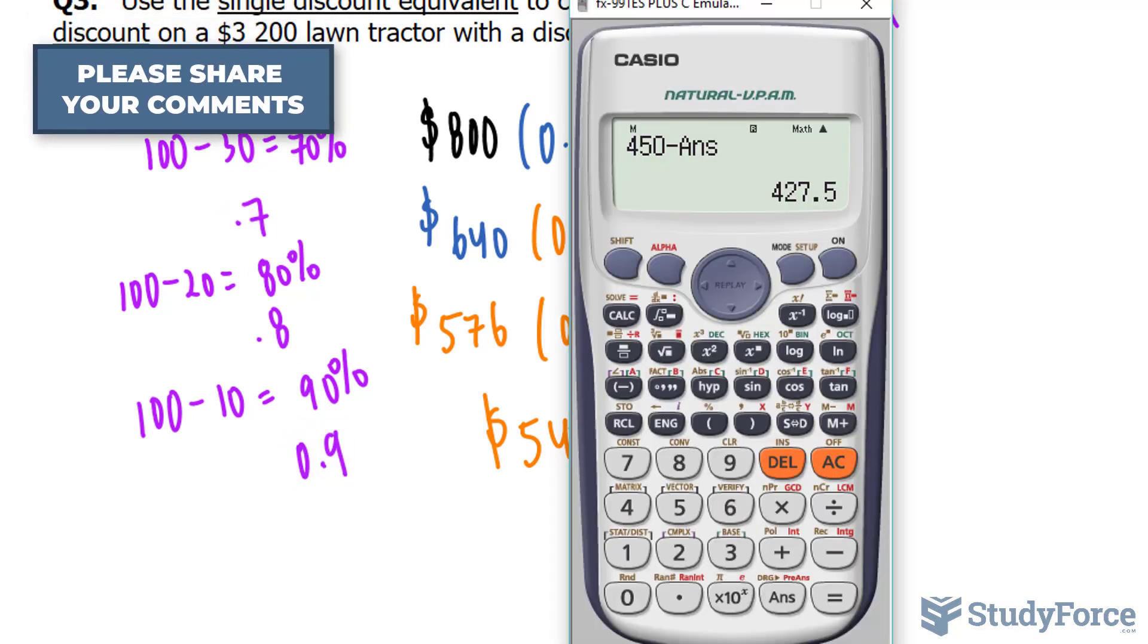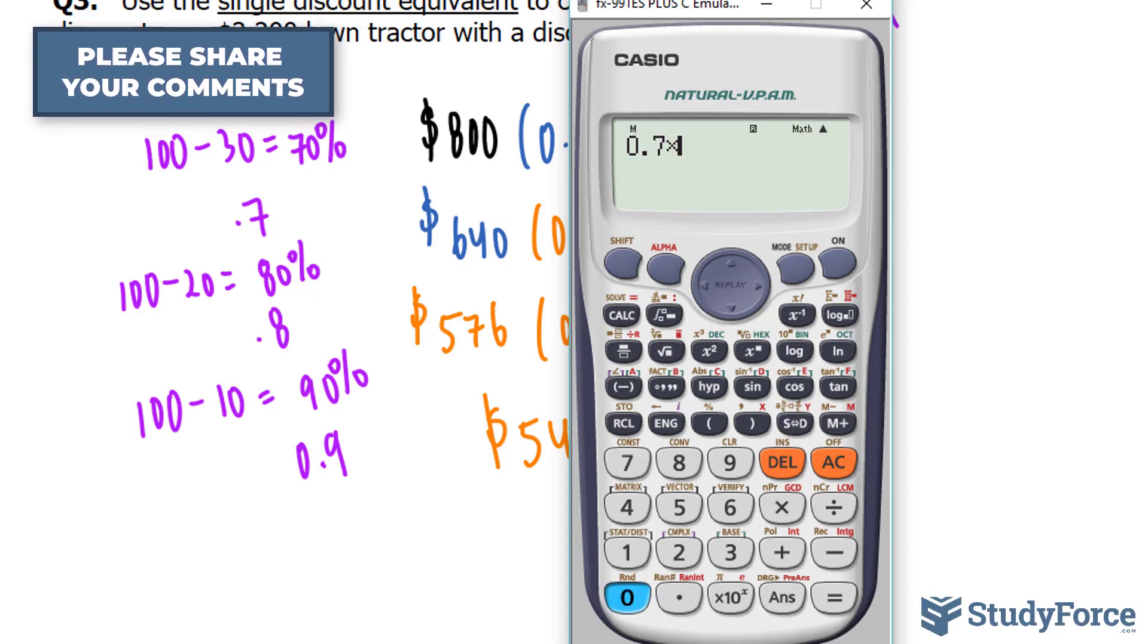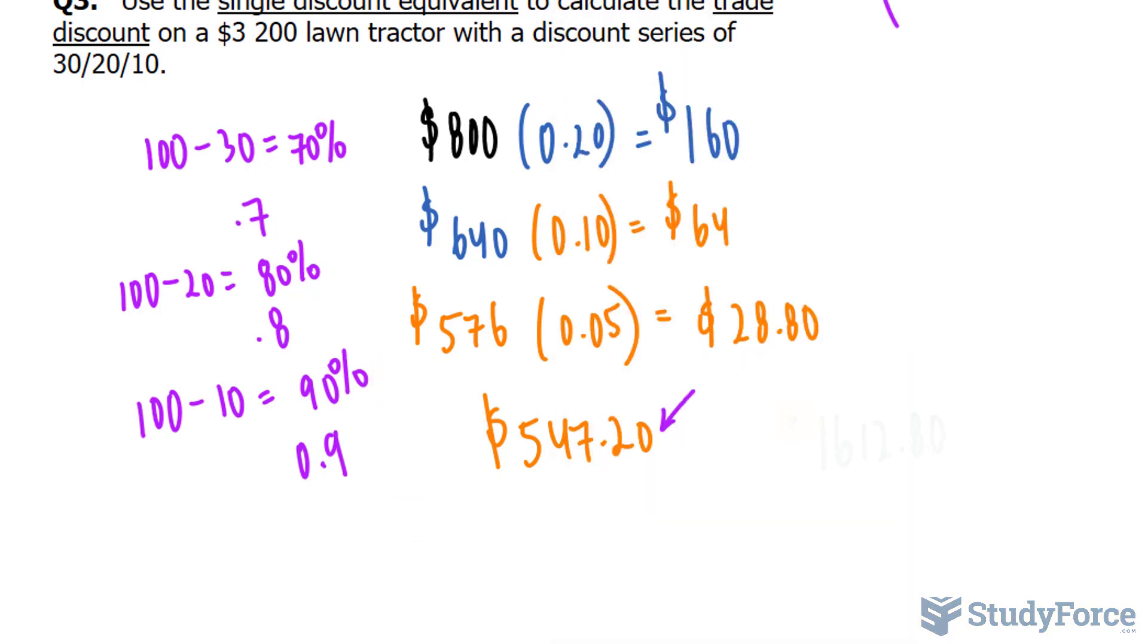Now, you multiply all of these together. So 0.7 times 0.8 times 0.9 gives us the following number. And on some calculators, you should see this.